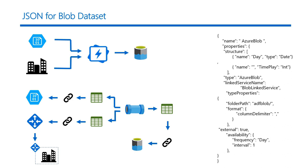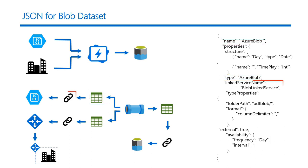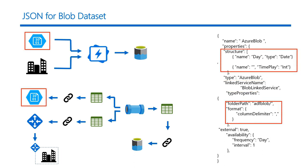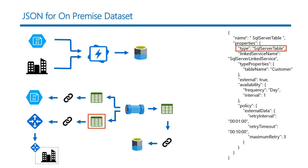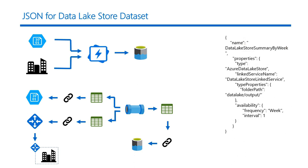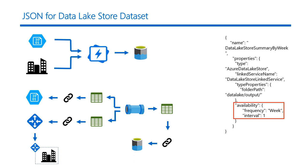Once I define the pipeline, I need to define the input data set — the type of data set as Azure Blob — and the linked service that it uses to connect to Azure Blob. Then comes the schema of the data set, the folder path of its location, and the column delimiter since it is a file-based store. I also need to specify the availability of this data set, namely once a day. Similarly, I define the data set for the on-prem data store and Azure Data Lake store. Note that the availability of the Data Lake store is once a week, which is equivalent to that of the pipeline.